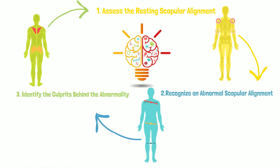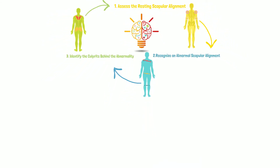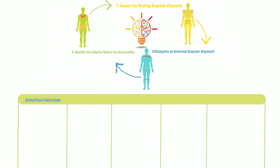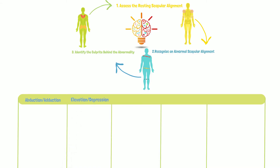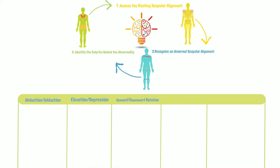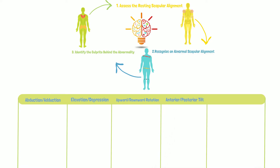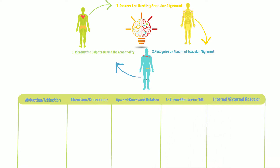There are five scapula positions that we will discuss: abduction and adduction, elevation and depression, upward and downward rotation, anterior and posterior tilt, and internal-external rotation.